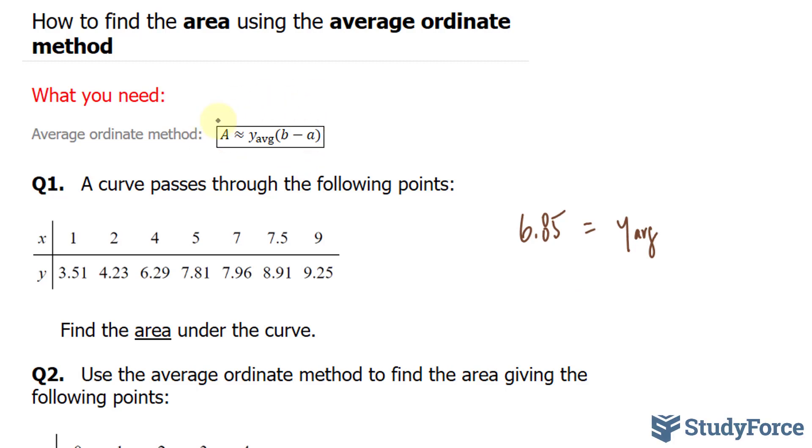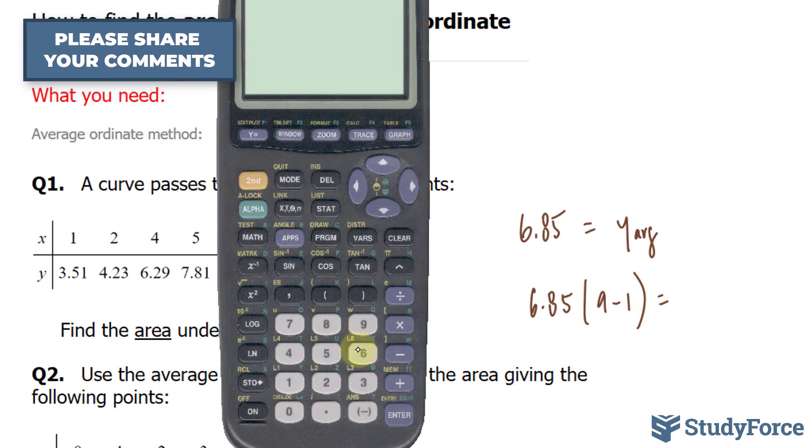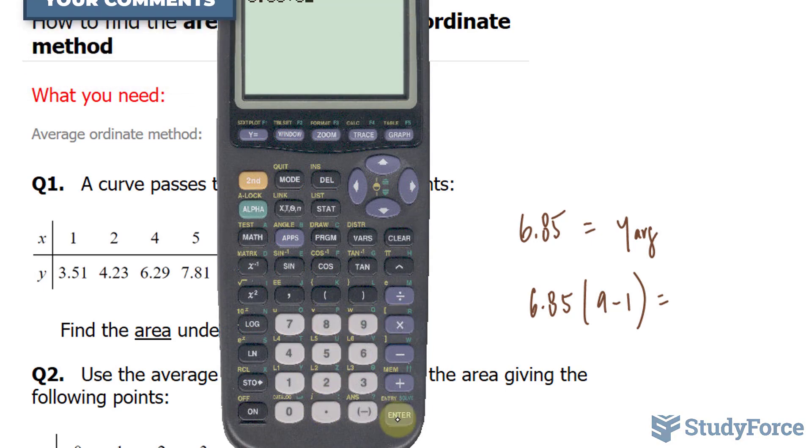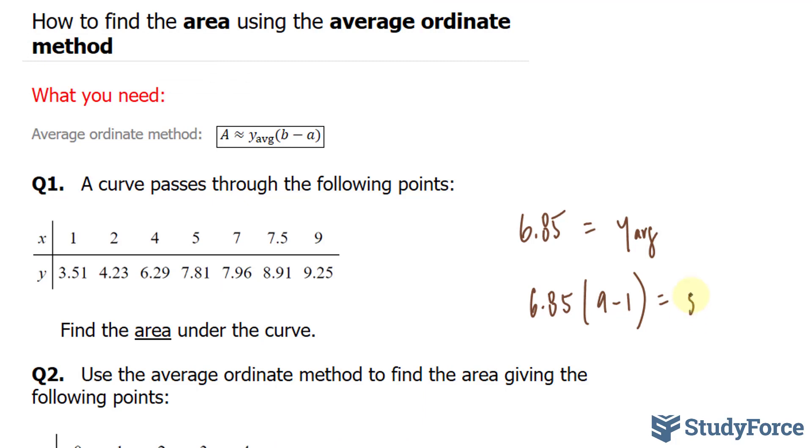The next step is to multiply 6.85 by the upper and the lower bound. Our upper bound is 9 and our lower bound is 1. So we have 6.85 times 9 minus 1. And this gives us, using our calculator, 6.85 times 8, and that gives us 54.8 units squared.